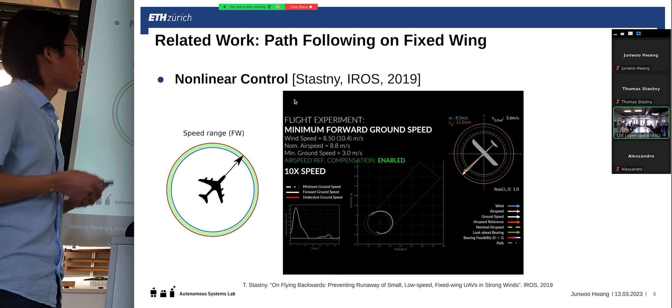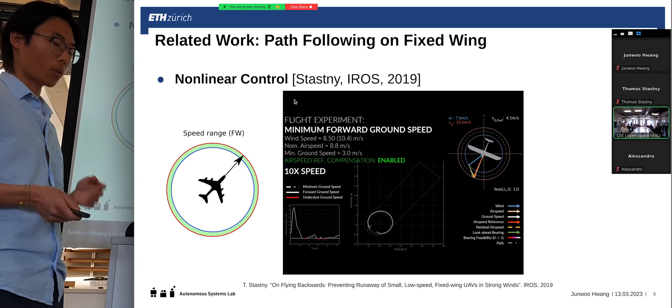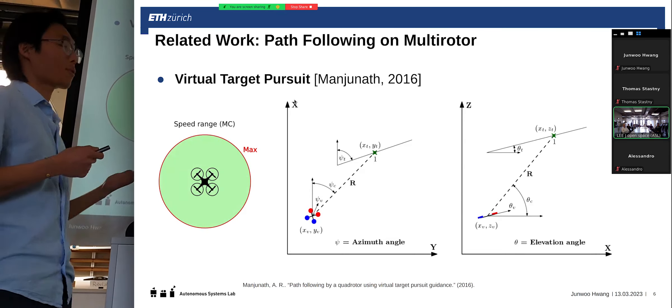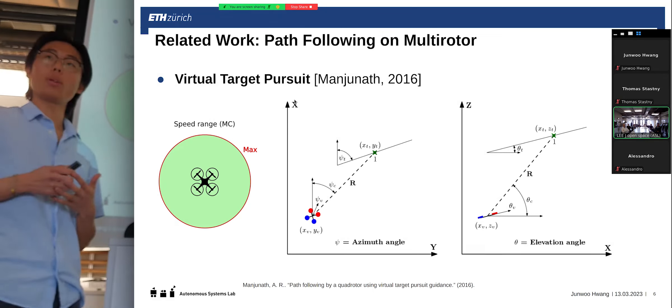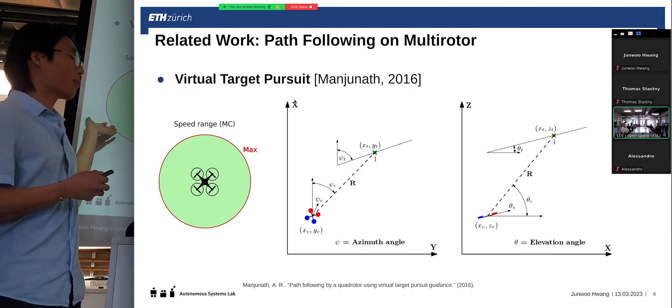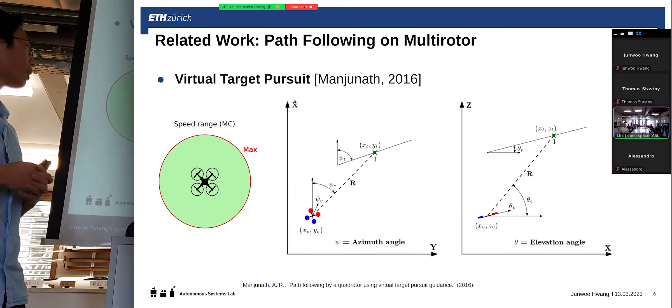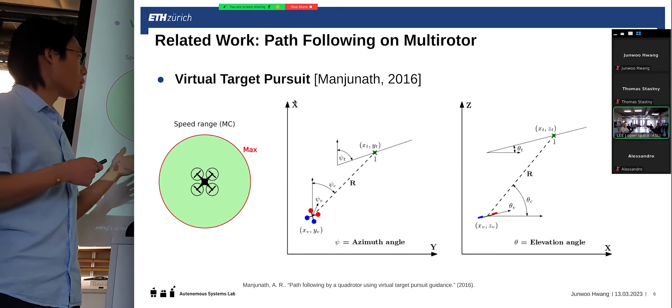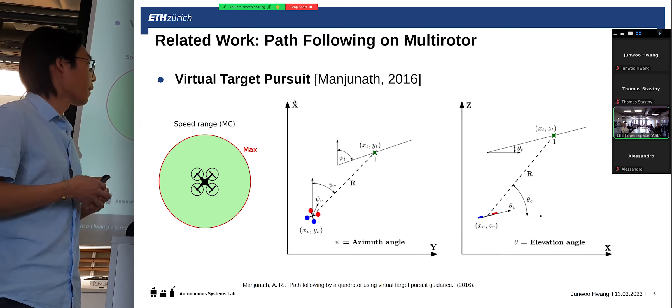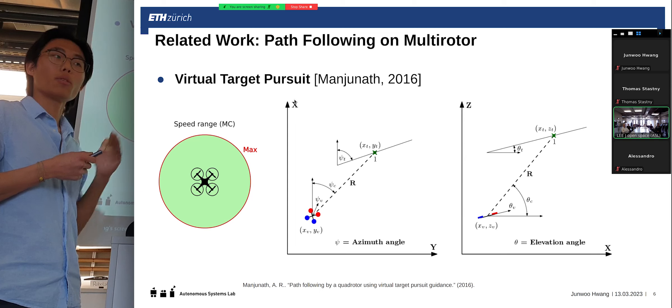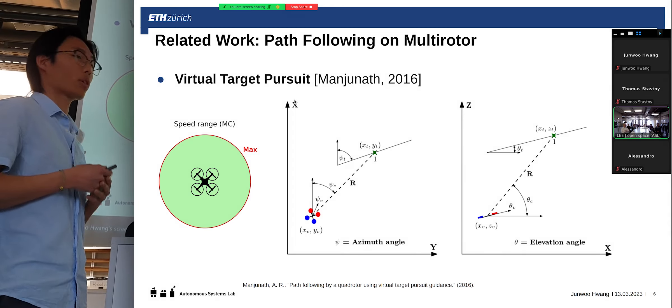Now, the second case is the multirotor. And multirotor, as you know, is very agile and usually can go to any trajectory. And for that, they can have an incredibly flexible velocity range and thus it uses often a slightly different path-following algorithm, where it just tries to follow a single point on the track and then that works very well.